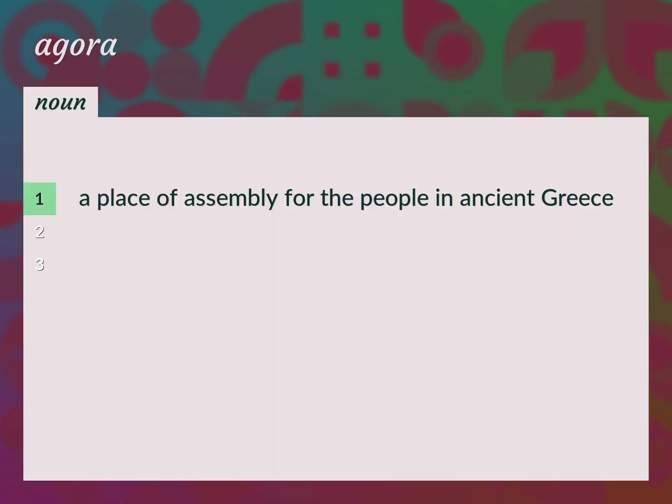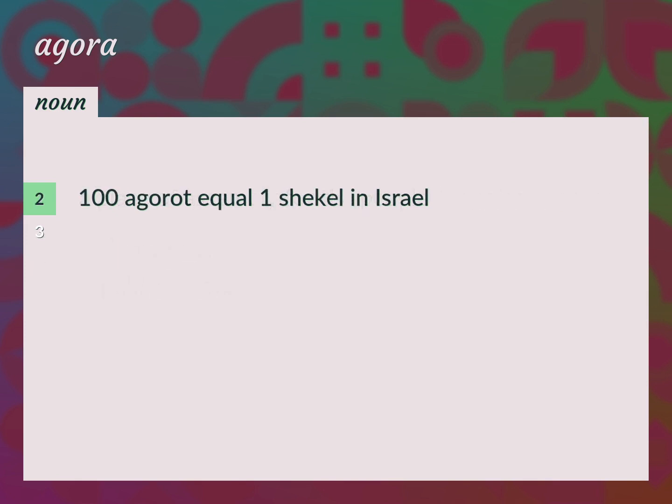A place of assembly for the people in ancient Greece. Public Square. 100 Agorot equal one shekel in Israel. The Marketplace in Ancient Greece.